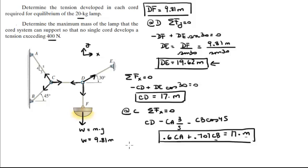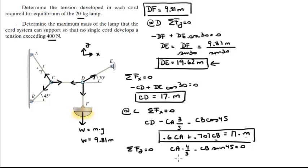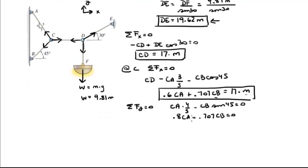Also at C, the sum of forces in the Y direction equals zero. In the Y direction we have CA times 4 over 5 minus CB times sine of 45 equals zero. Cleaning this up: 0.8 CA minus 0.707 CB equals zero. Let's call the X-direction equation Equation 1 and the Y-direction equation Equation 2.